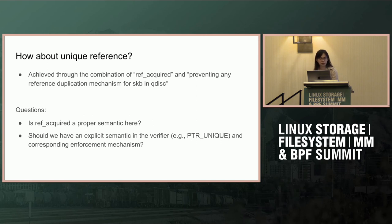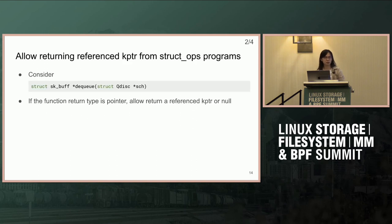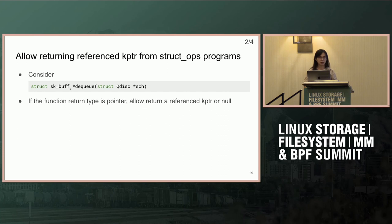The second part of the SKB lifecycle is returning it to the kernel. If we look at the signature of the dequeue function, it's the return type. Right now, struct ops doesn't allow returning a key pointer, so in our latest patch set we try to enable this. The way it's been implemented has two steps. On the access path in the verifier there are two things: first, check for reference leak; second, check the return code.